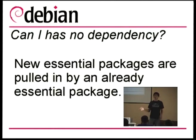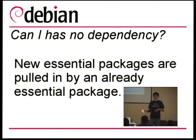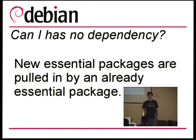Some people were wondering about bash depending on dash. New essential packages are only pulled in by another essential package or by another package explicitly. APT won't automatically install a new essential package just because it is marked as essential. This would be a problem on mixed systems — for example, if you have APT using both unstable and stable, and a package used to be essential in unstable but no longer is, it will be a problem if APT automatically installs new essential packages.